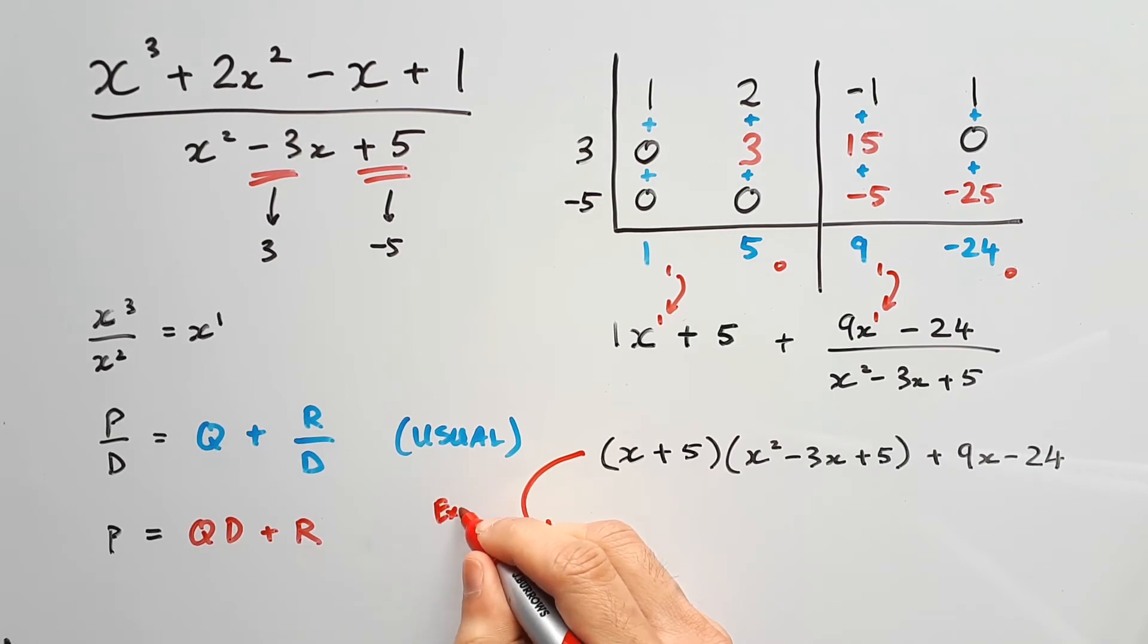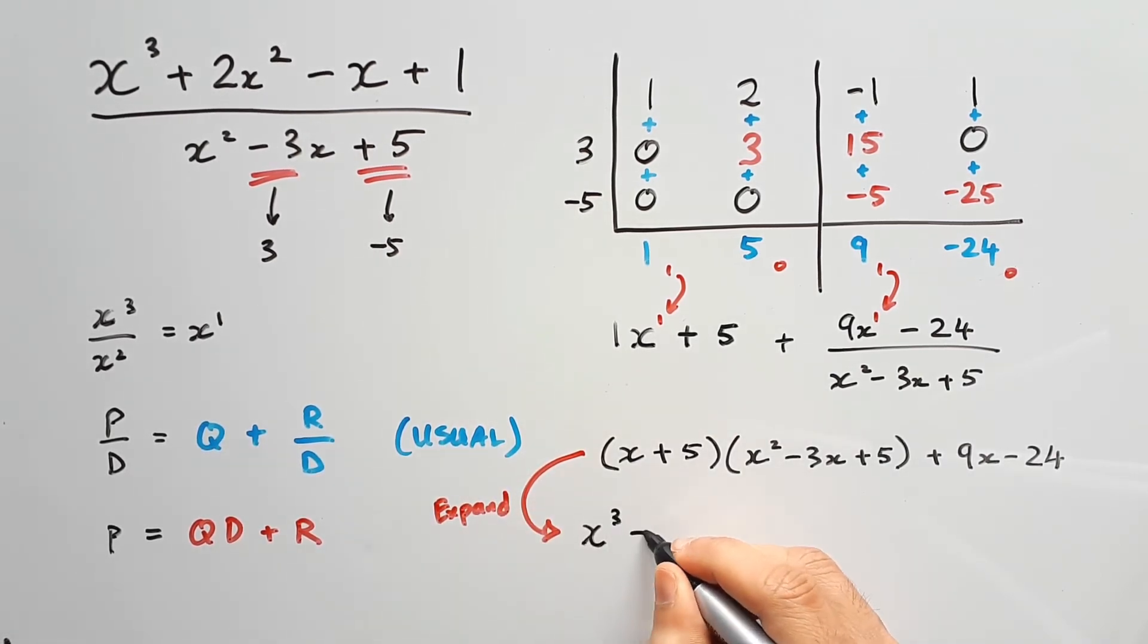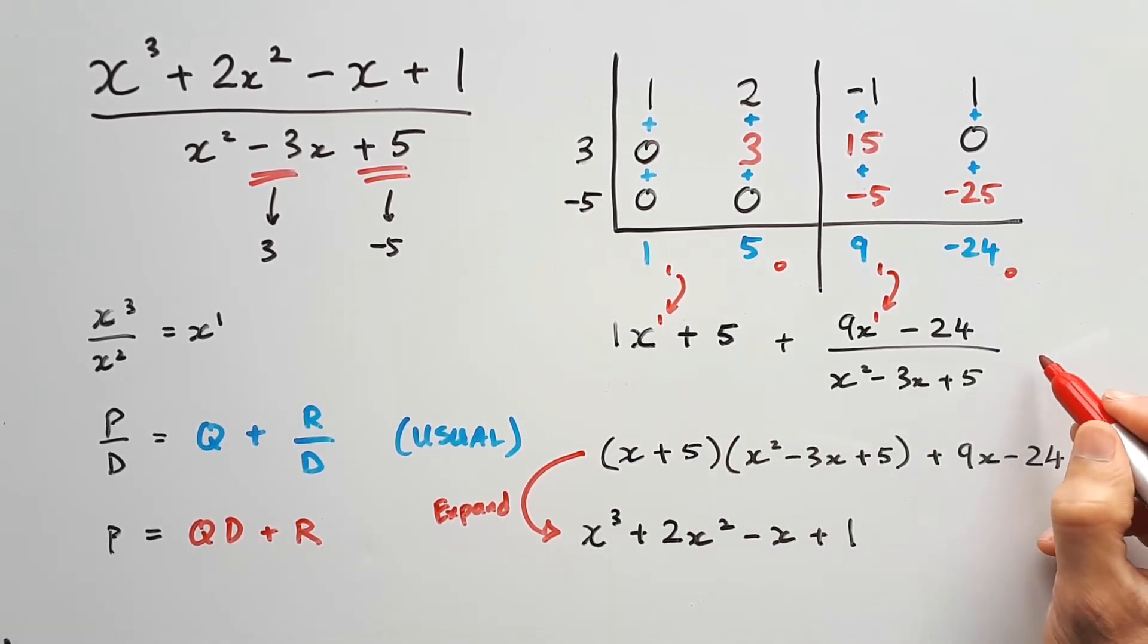If you expand that expression, you will end up getting back the original cubic polynomial, x cubed plus 2x squared minus x plus 1. Both answers are acceptable, but it really depends on which format they want you to write it in. So just pay attention to that when they ask it in the question. Okay, so if that all made sense, let's have a look at another one.